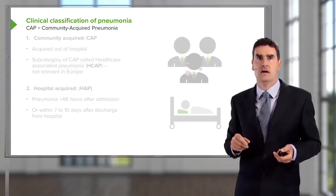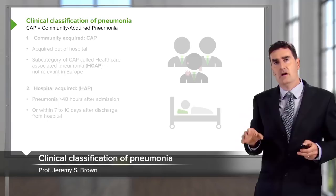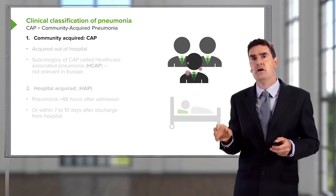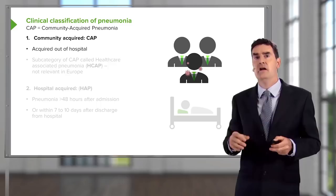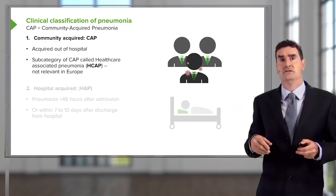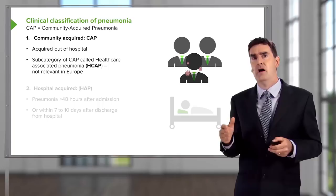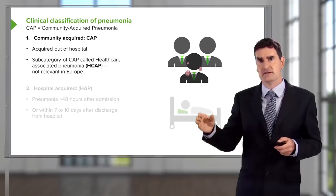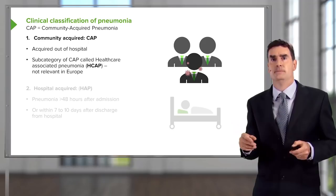Pneumonia is classified into different types. The most important, and the subject of most of this talk, is community-acquired pneumonia — a pneumonia acquired when living at home, not in hospital. There is a subcategory called healthcare-associated pneumonia, defined recently in America, but probably not relevant in Europe as it occurs in people in long-term care facilities or nursing homes and is not significantly different from standard community-acquired pneumonia, so we group it together.